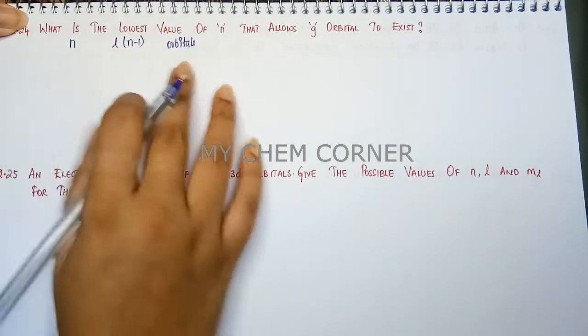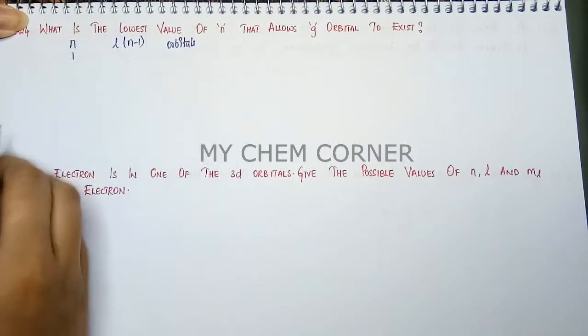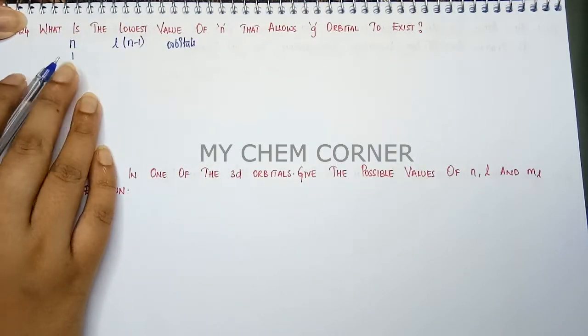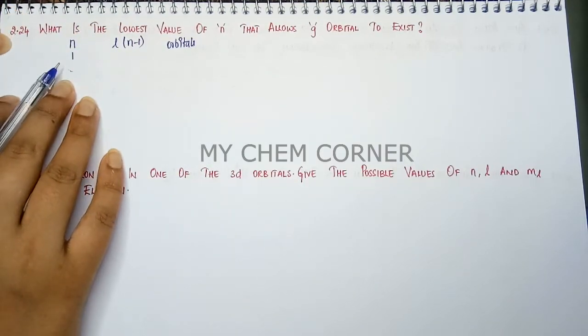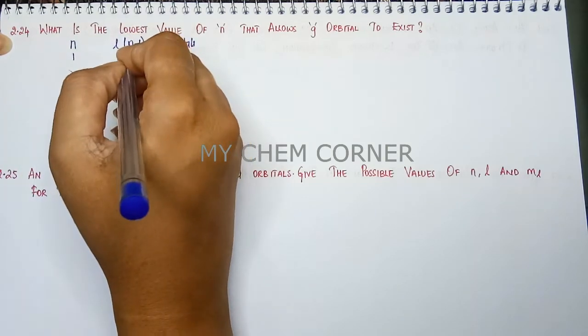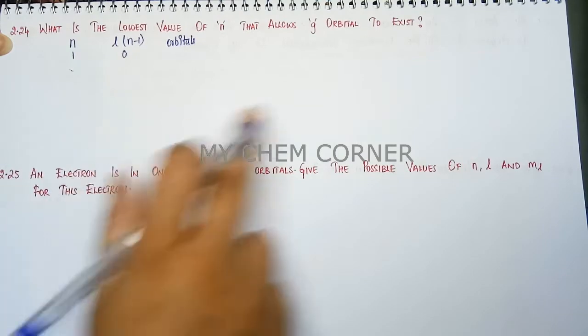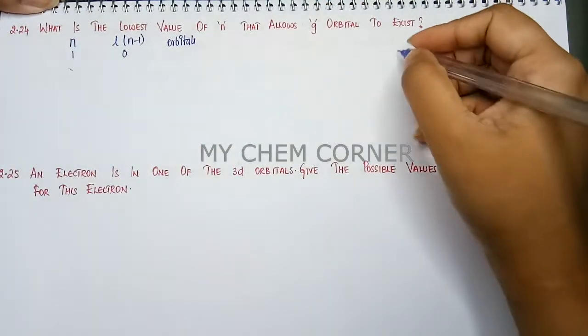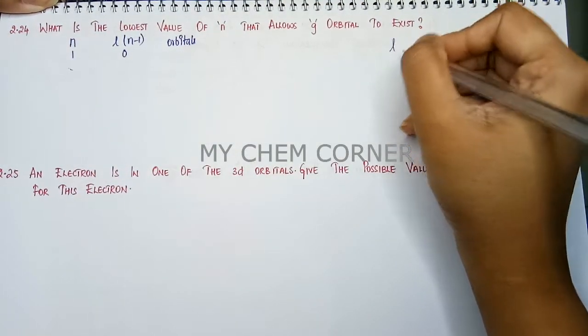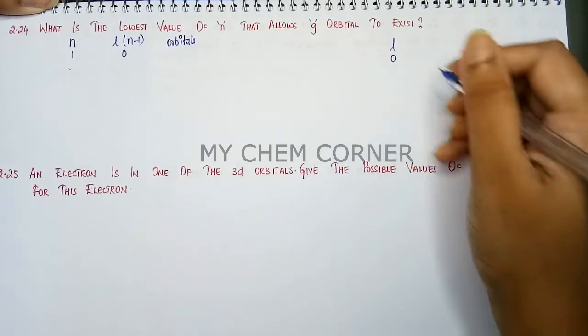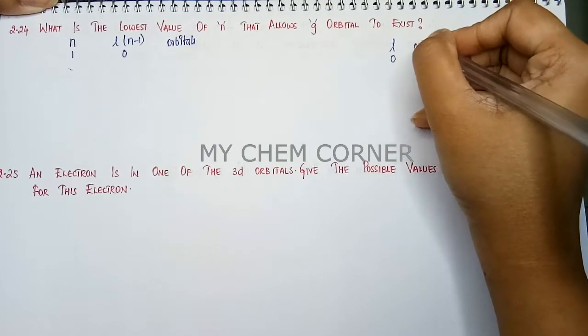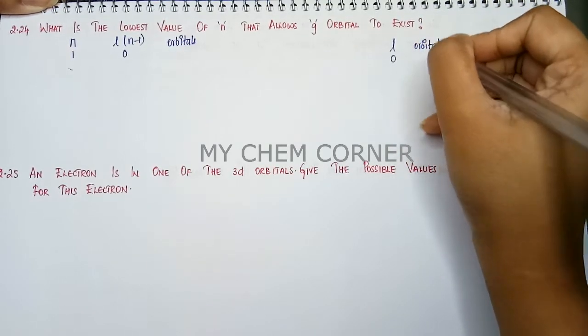All right so now when n equals 1, n always starts with an energy state 1. When n equals 1 your value of l equals 0. Now when l equals a certain value there is a table for it. So we say that when l is 0 the orbital that you have is s.